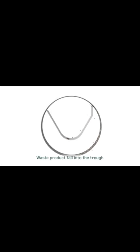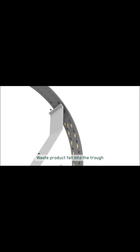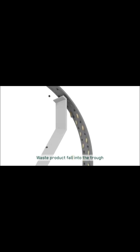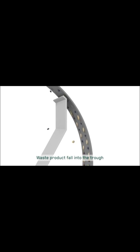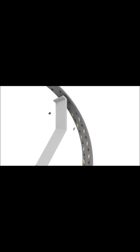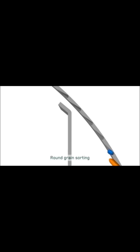Generally, the Indented Cylinder Separator separates seed on the basis of length. The indents are on the inside surface of the cylinder — generally hemispherical in shape — to catch short seeds by the combined effect of centrifugal force. Large seeds are rejected and drop into the cylinder.